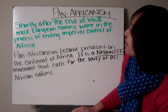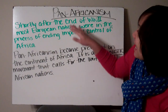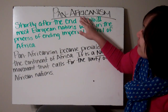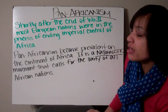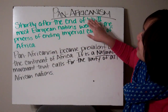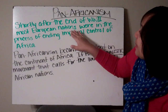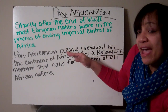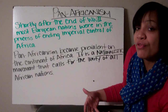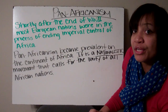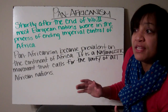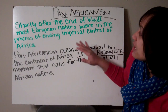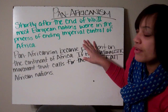The next social movement we want to look at is Pan-Africanism — if you look at the root word, Africa. So we're going to go to the continent of Africa. Shortly after the end of World War II, most European nations were in the process of ending imperial control of Africa. Remember, we already talked about the Scramble for Africa — how all these European countries went in and divvied up Africa into different areas. Well, now it's starting to change and they're starting to leave after World War II.